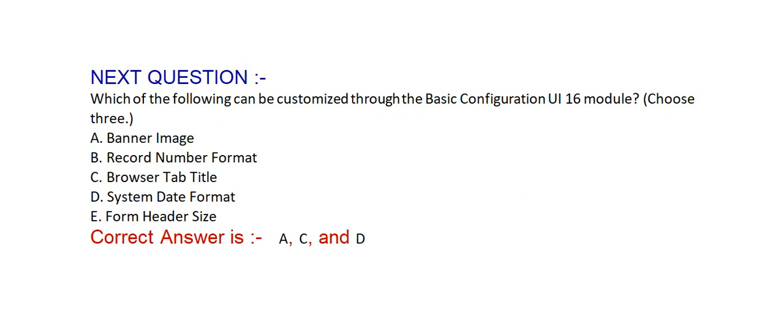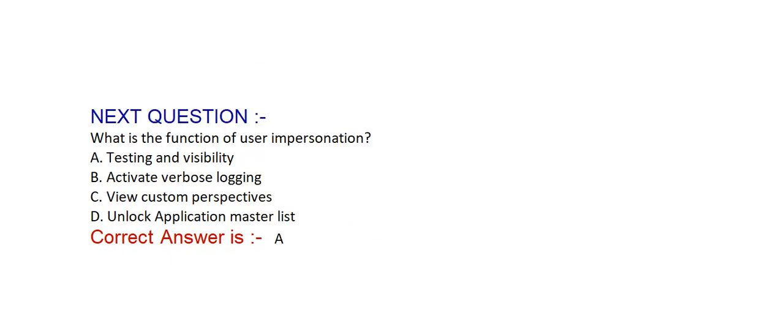Which of the following can be customized through the basic configuration UI 16 module? Choose 3. Option A: banner image. Option B: record number format. Option C: browser tab title. Option D: system date format. Option E: form header size. Correct answer is options A, C, and D — banner image, browser tab title, and system date format.